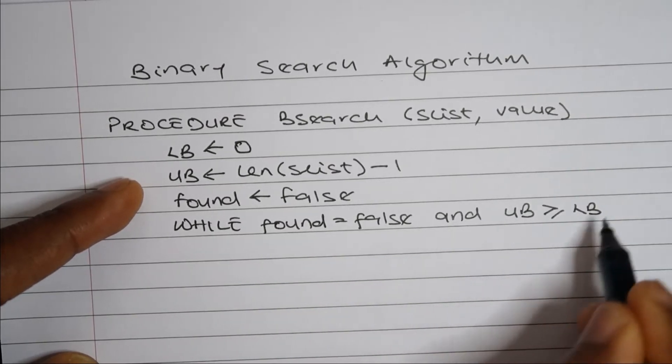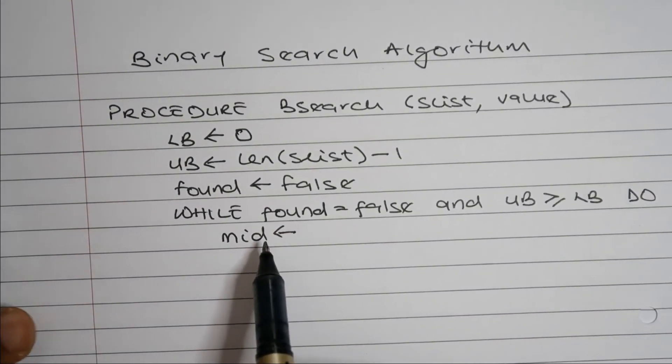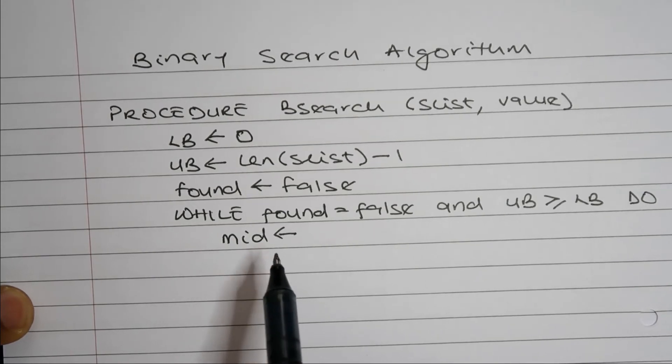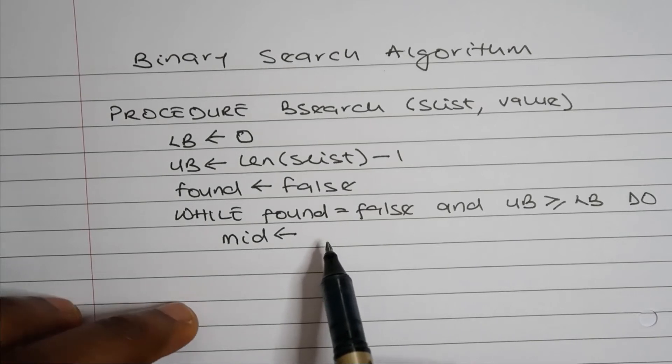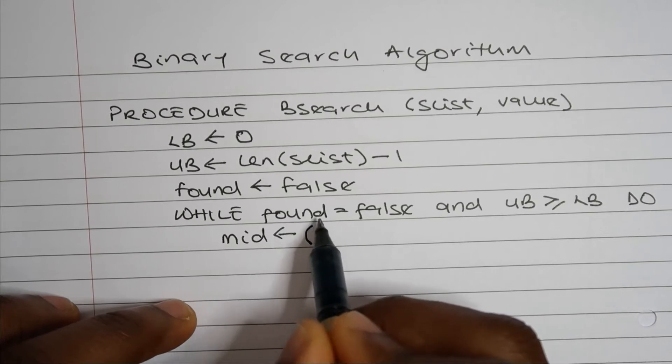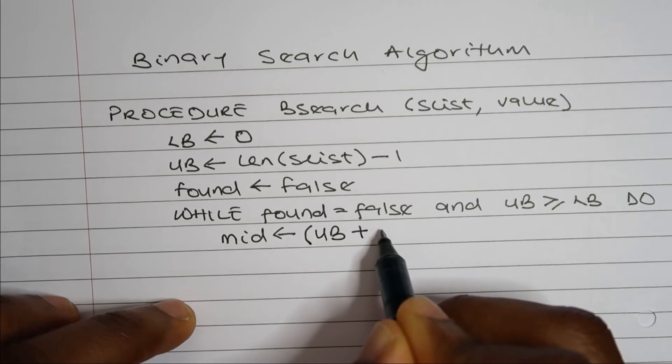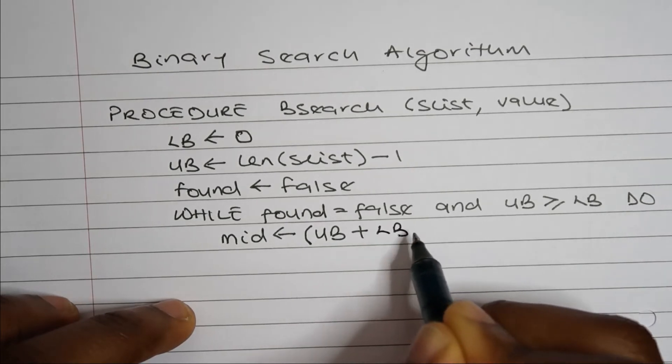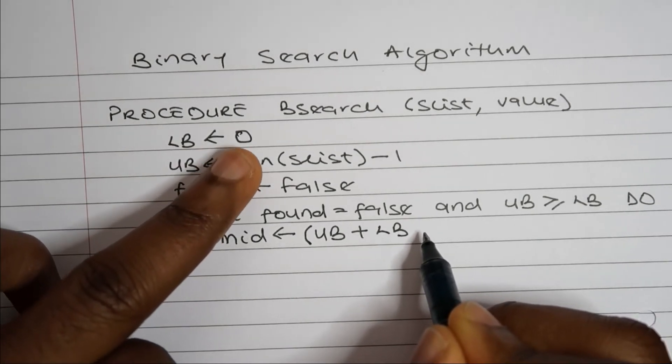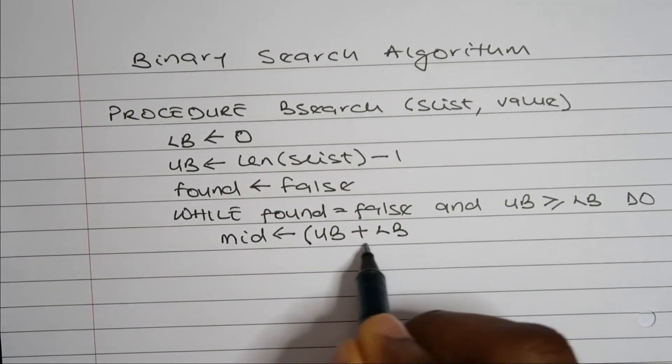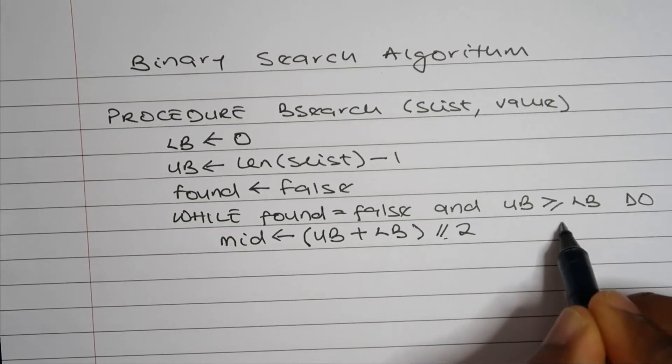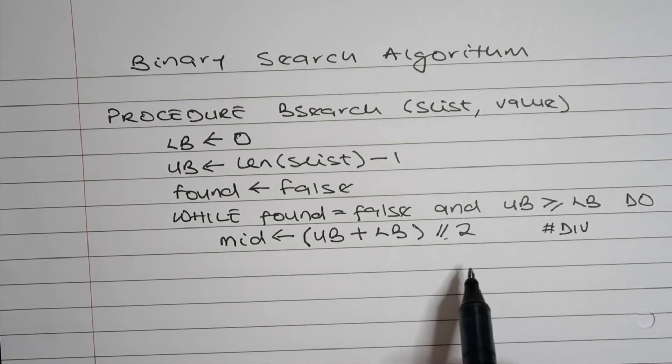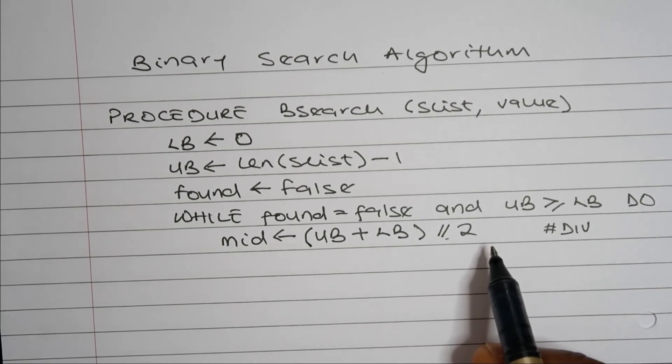Now, if these conditions are true, we'll create a new pointer called mid. The pointer mid would hold the index position of the value in our midpoint. To do this, we would add our upper bound to the value in our lower bound. So technically we'll be saying zero plus the length of SList minus one, we add both of them together, and then we div this by two. Now we're dividing by two simply because we want to return a whole number after our division. We don't want numbers with fractional parts because otherwise it won't work in our algorithm.